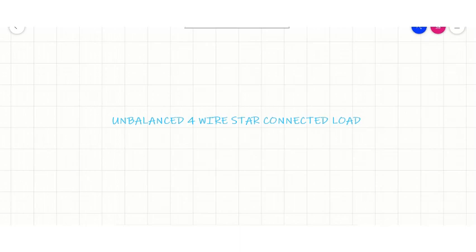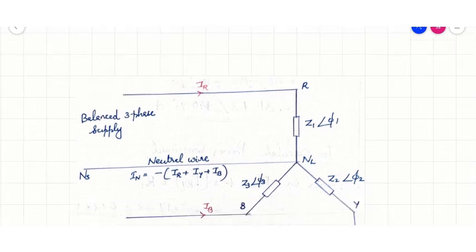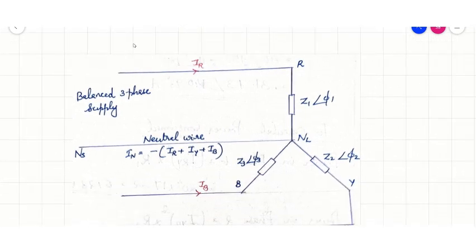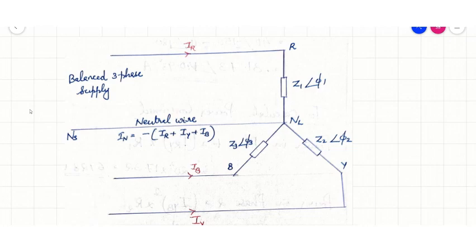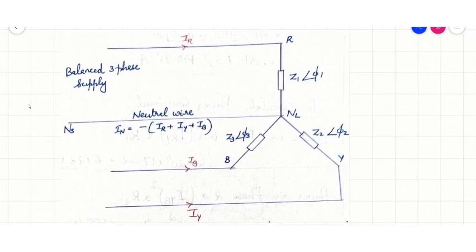Hello dear students. This session is regarding unbalanced 4-wire star connected load. This diagram shows an unbalanced 4-wire star connected load. The star point NL of the load is connected to the star point Ns of the supply — the load neutral NL is connected to source neutral Ns.